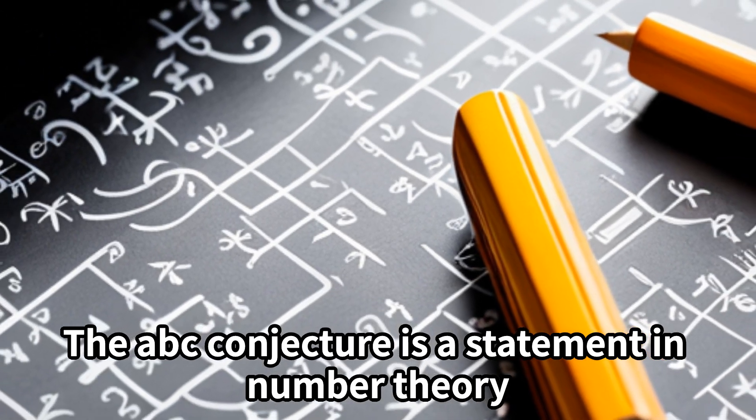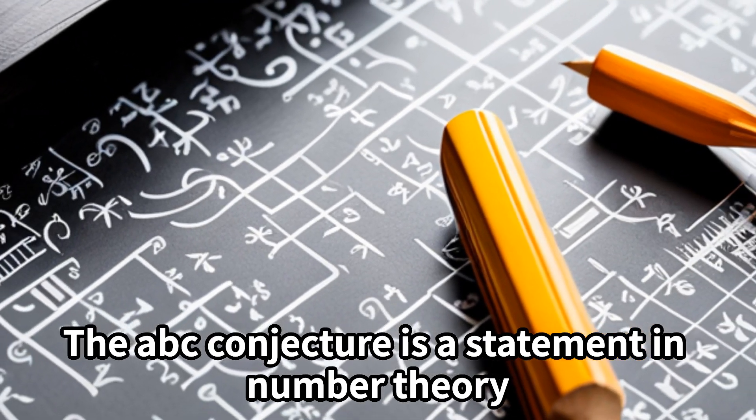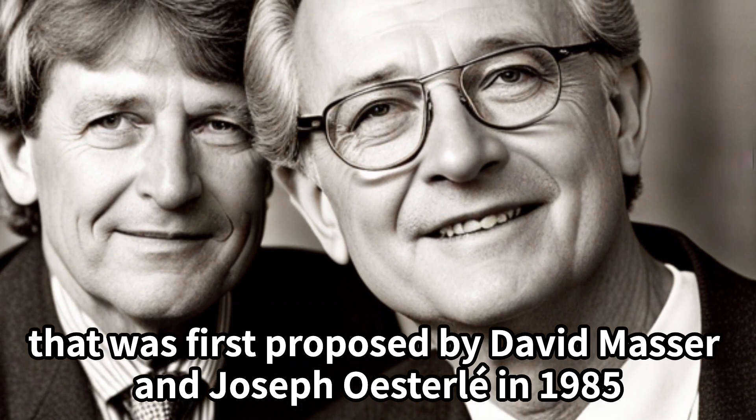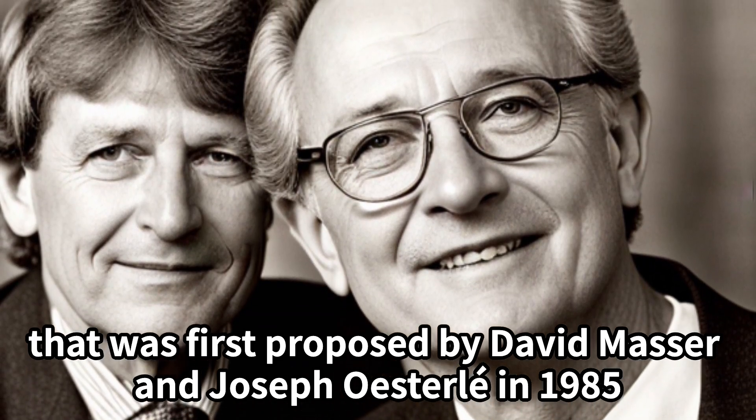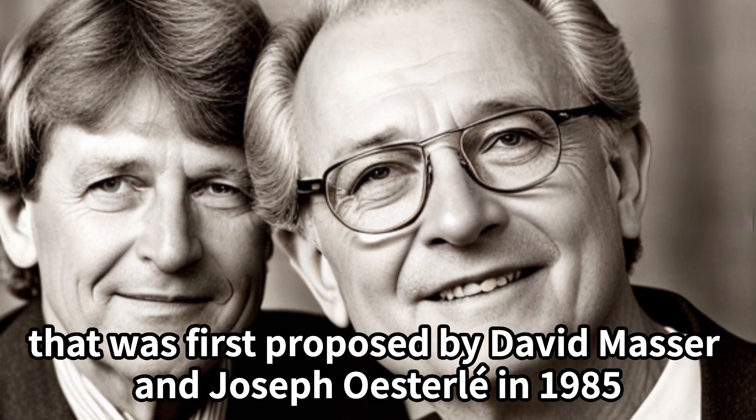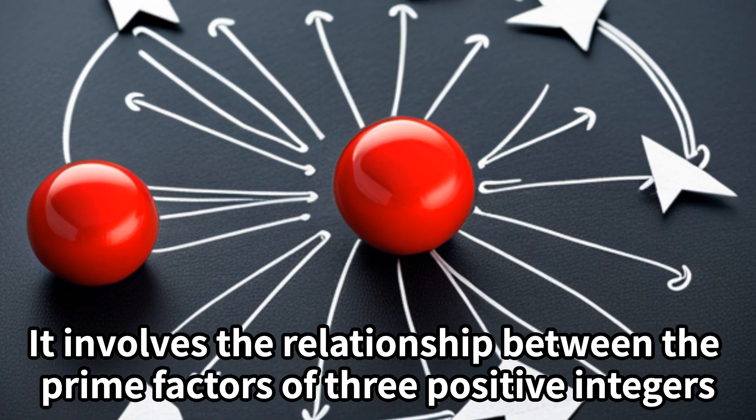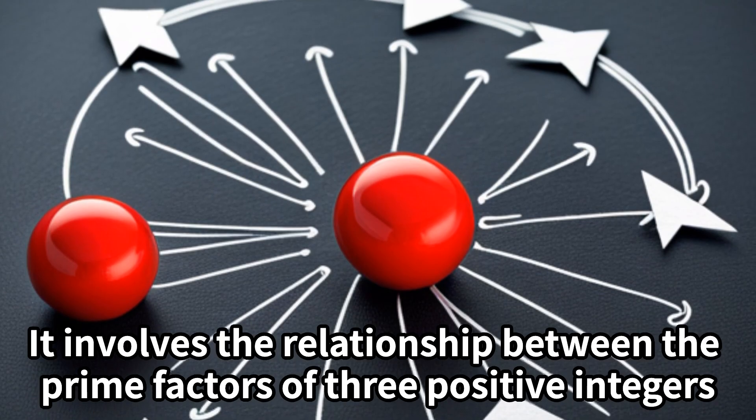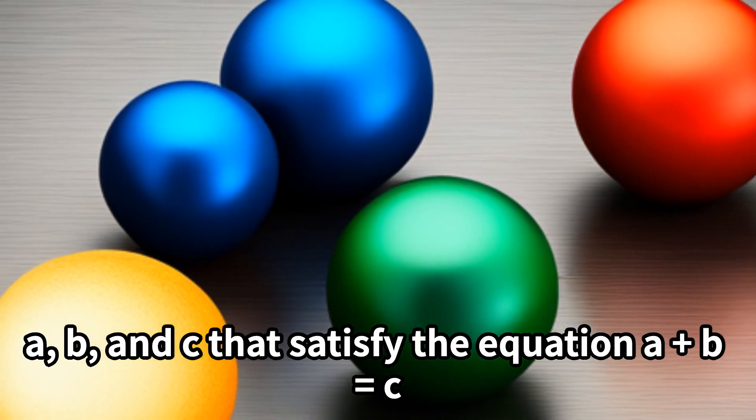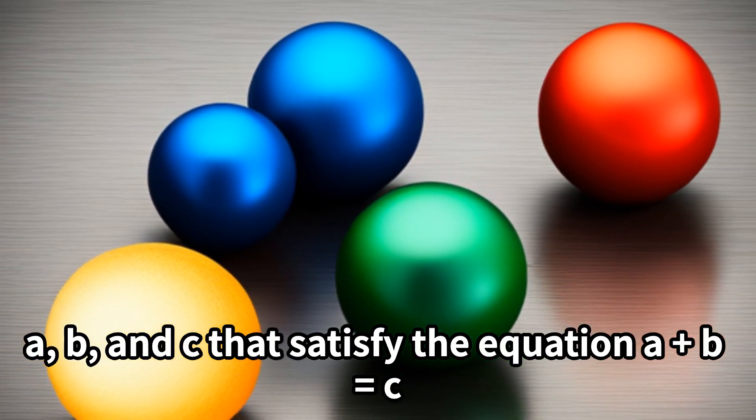The ABC conjecture is a statement in number theory that was first proposed by David Masser and Joseph Osterlay in 1985. It involves the relationship between the prime factors of three positive integers, A, B, and C that satisfy the equation A+B=C.